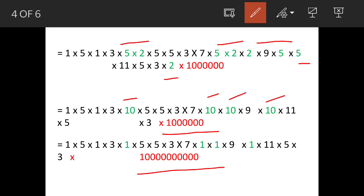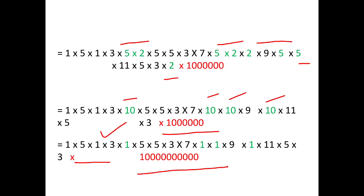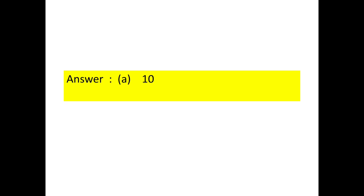We already have six zeros, so adding four more gives us ten zeros in total. This is how we solve such questions. The answer is option A — there will be ten zeros at the end of the multiplication.